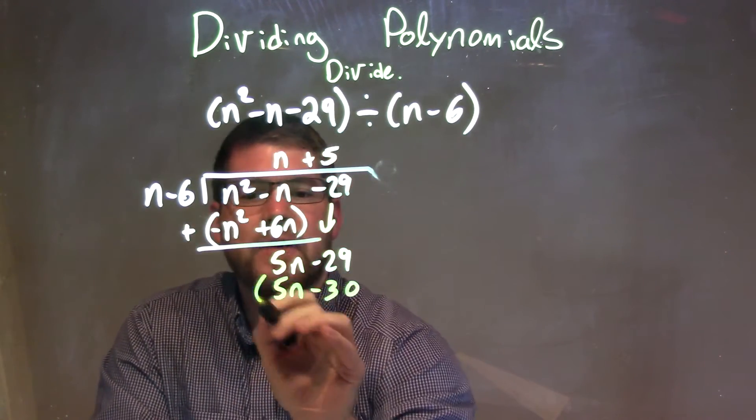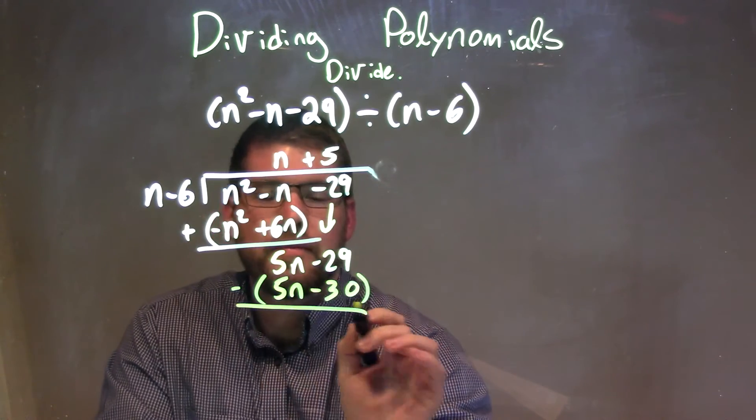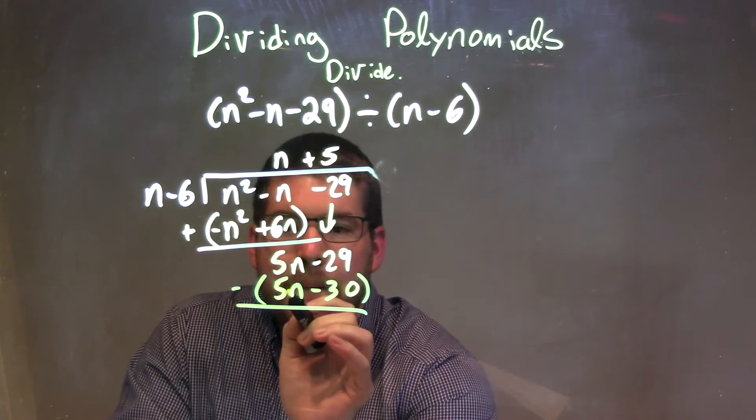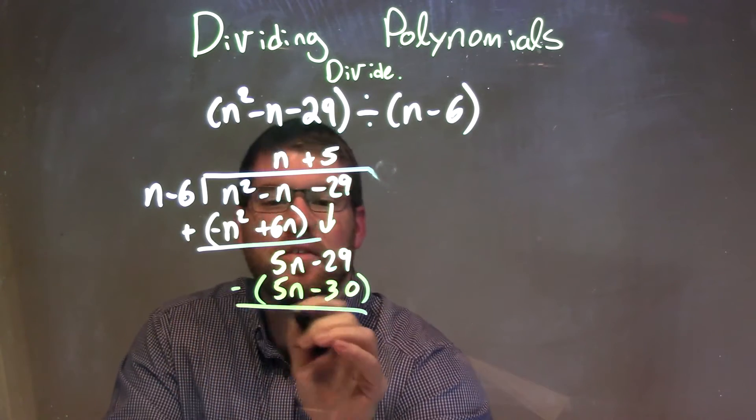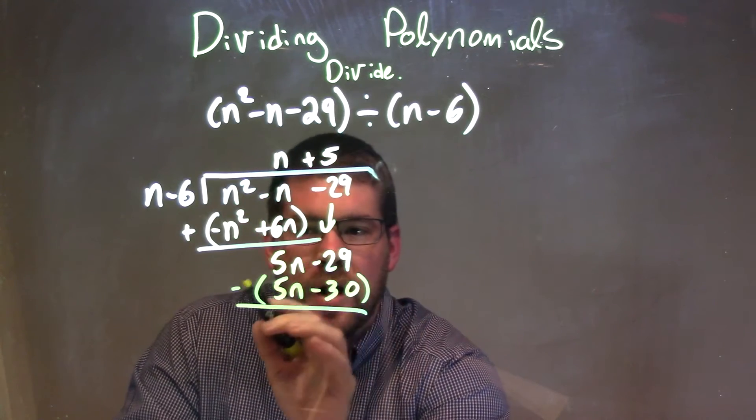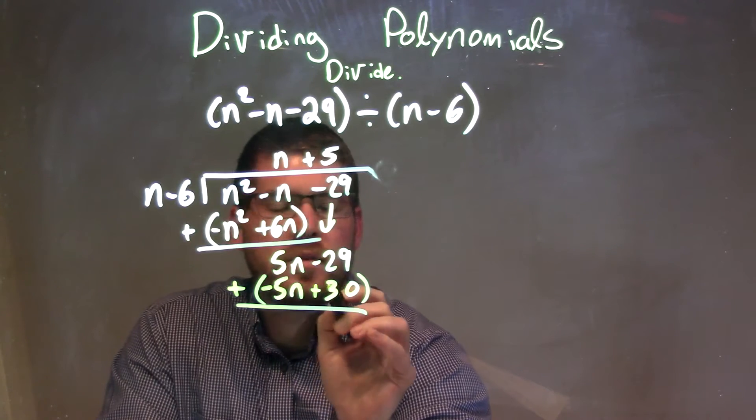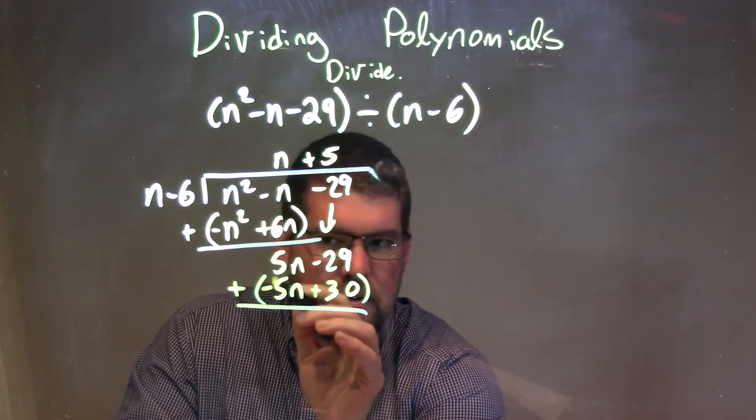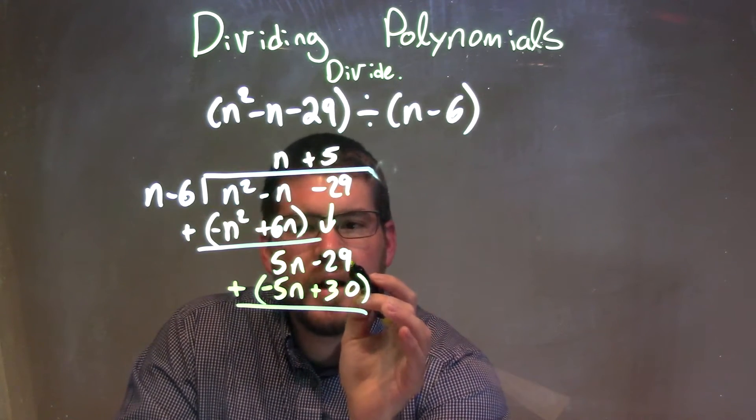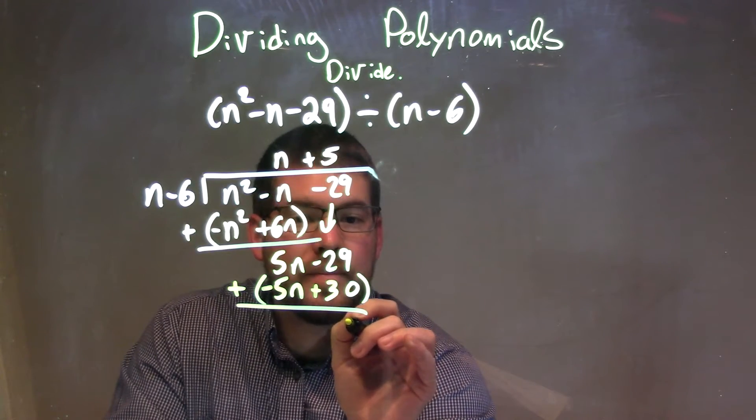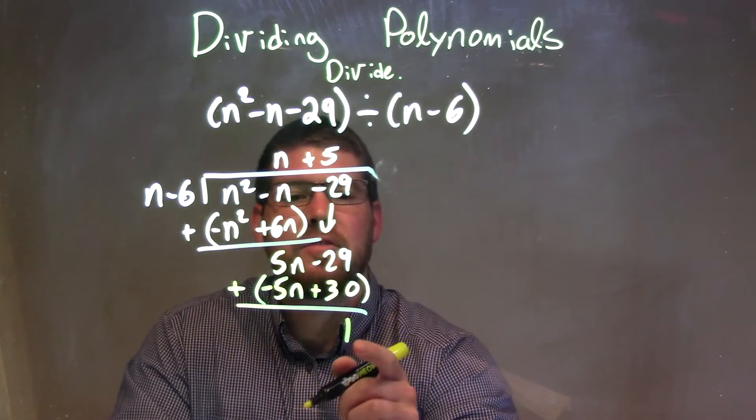And again, we need to subtract these two values. 5n minus 5n is just zero. Great. But negative 29 minus a negative 30, if you need to distribute this minus sign to all parts, it's easier. Minus 29 plus 30 is just a 1, positive 1, and that is our remainder.